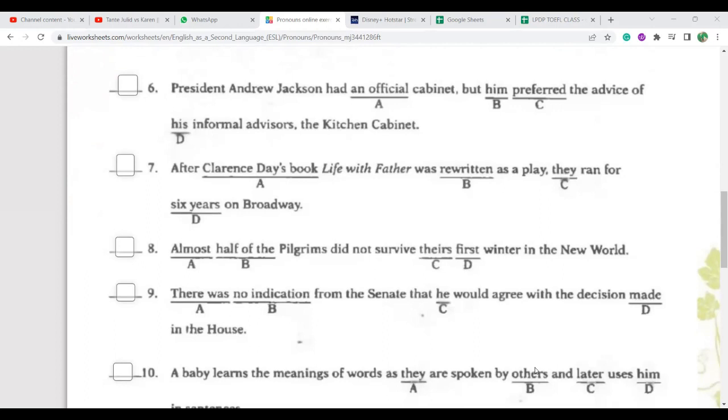Okay, number six. B should be he. But he preferred the advice of his informal advisors, the Kitchen Cabinet. President Andrew Jackson had an official cabinet, but he preferred the advice. He refers to President Andrew Jackson. Clear? Number six is clear, okay.